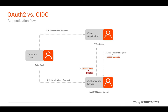First, the resource owner attempts to access the application. The application sends an authorization request to the authorization server. In return, the authorization server obtains the credentials from the user, validates them, and sends an access token to the application along with a new token called the ID token.